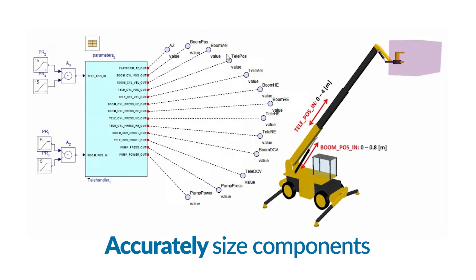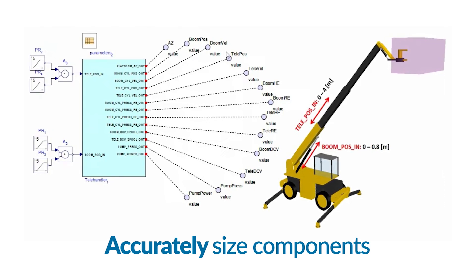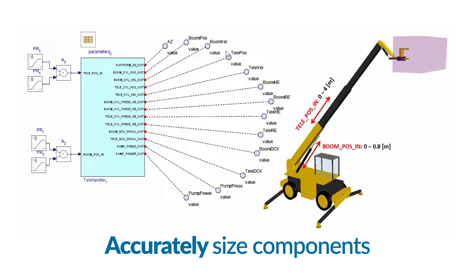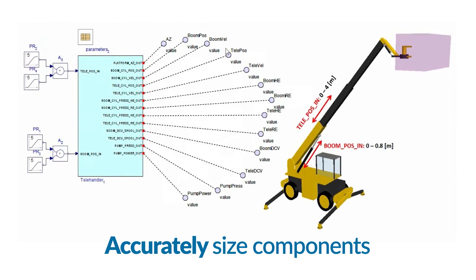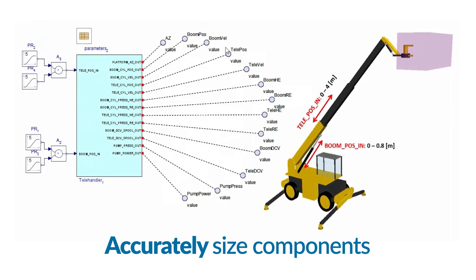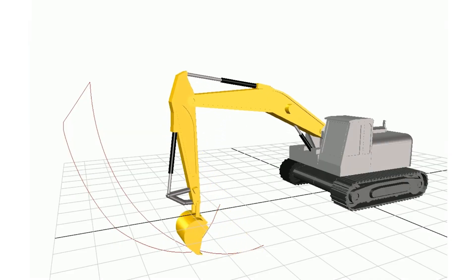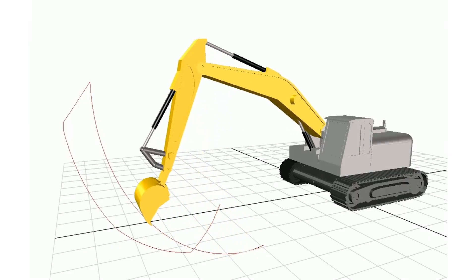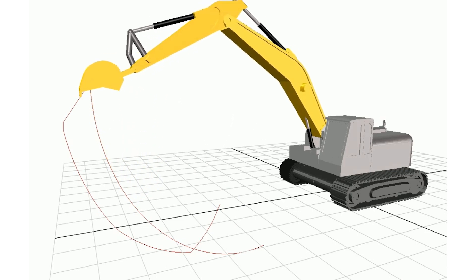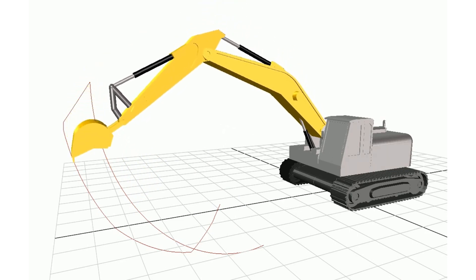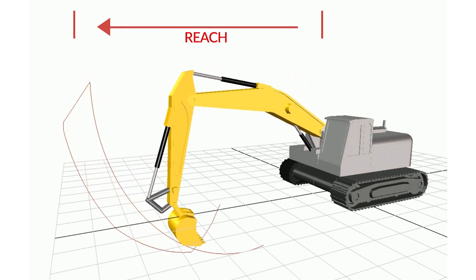Changing parameters produces different operating scenarios to accurately size booms, motors, gears, and cylinders. For example, with this excavator model, the bucket motion path and reach can be assessed for a variety of conditions.